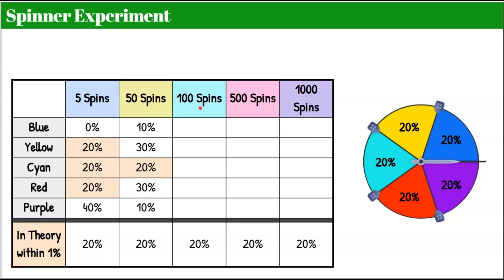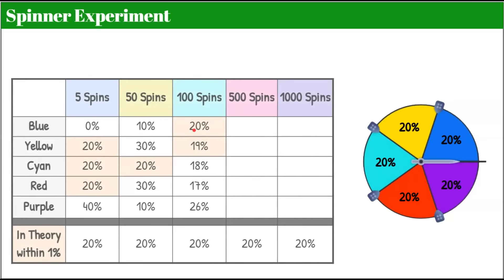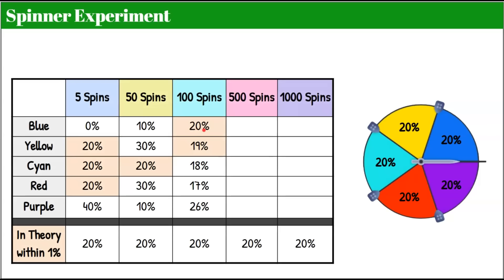Then I tried 100 spins. I had my simulator spin the spinner 100 times, and it told me it stopped on blue 20% of the time, yellow 19%, cyan 18%, red 17%, and purple 26%. These are close — two of our outcomes were within 1%, two were even closer, and only one was pretty far off after 100 spins.